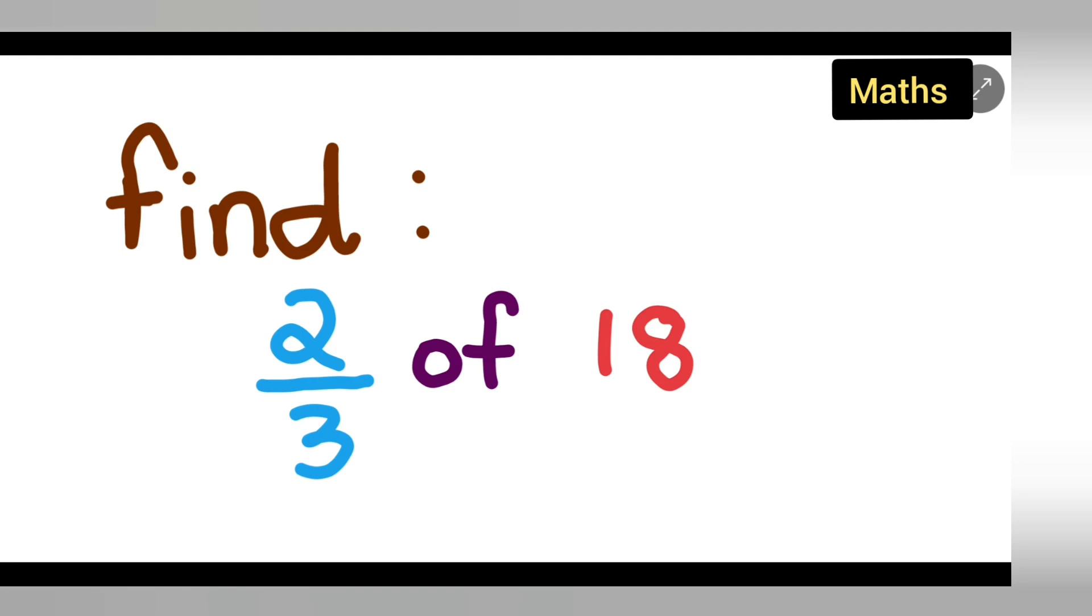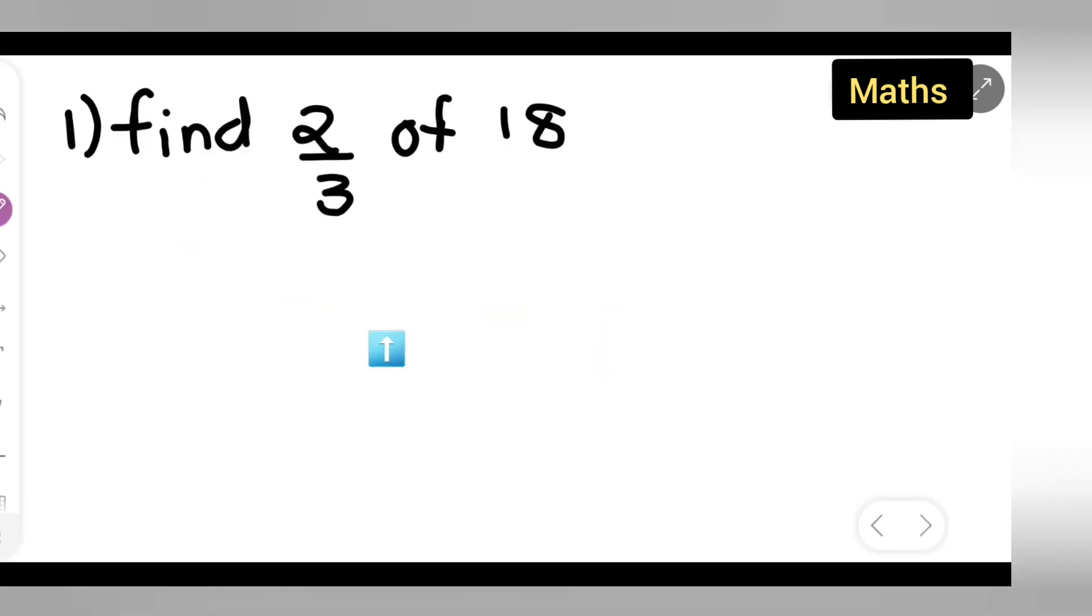Welcome to today's class of mathematics. Today's question is taken from class 7 mathematics. The question is: find 2 upon 3 of 18. So 'of' means we are going to multiply this.